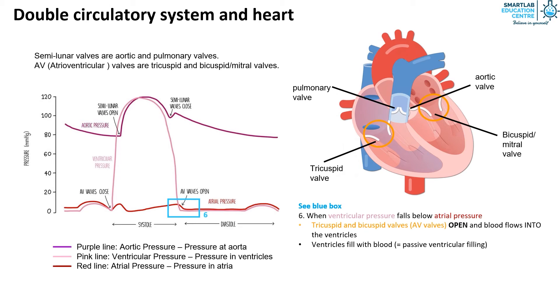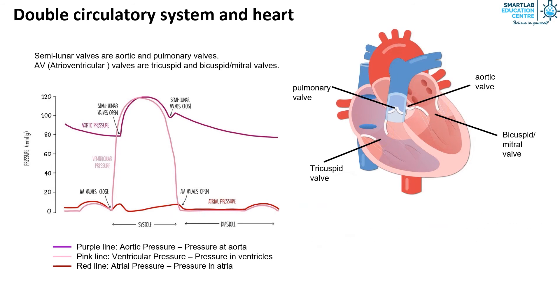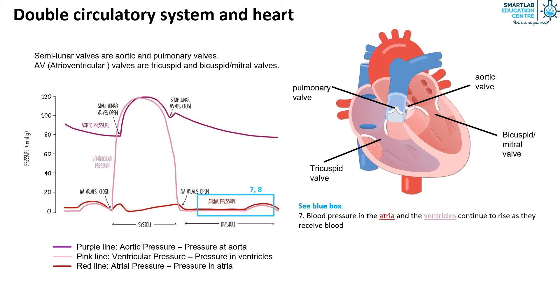In the last stage, the blood pressure in the atria and the ventricles continues to rise as they receive blood. Atrial systole begins again and the cycle repeats.